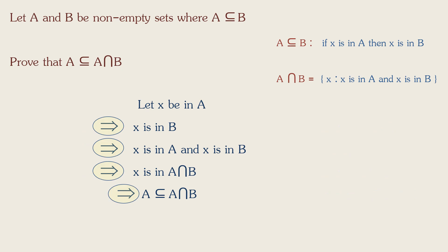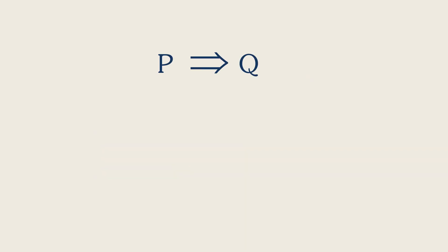This symbol, implication, means that if the previous expression is true, the next expression will be true. So if P implies Q, that means whenever P is true, Q is true. That's its definition.